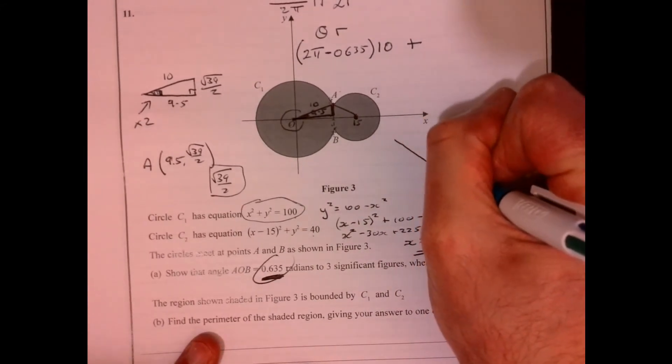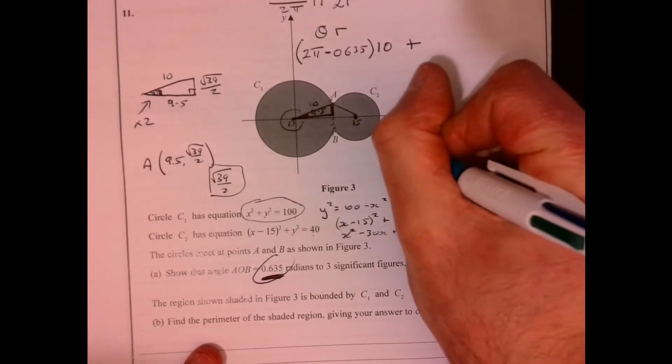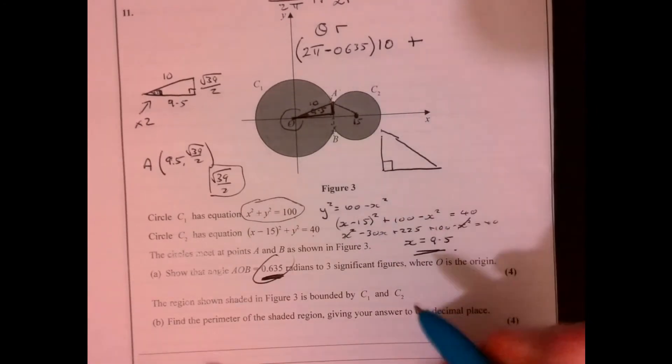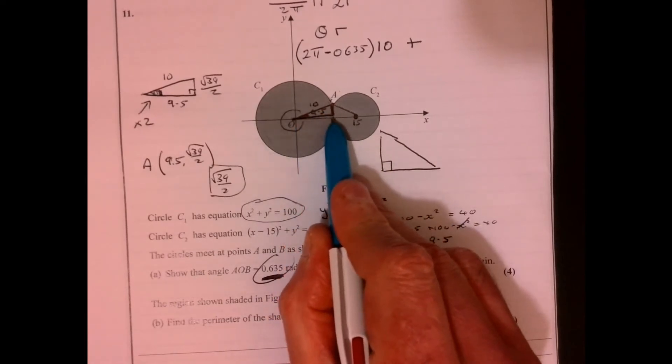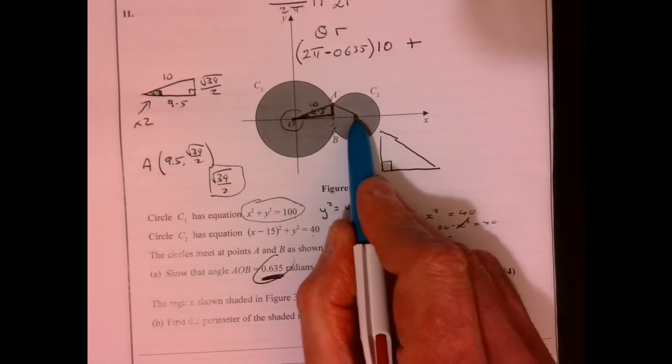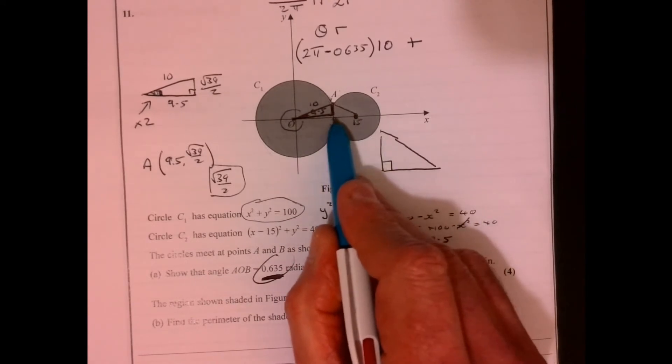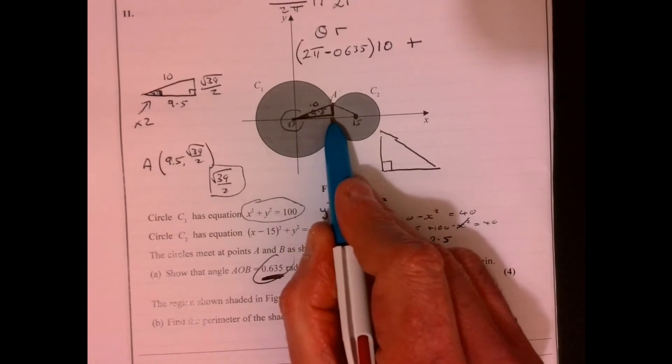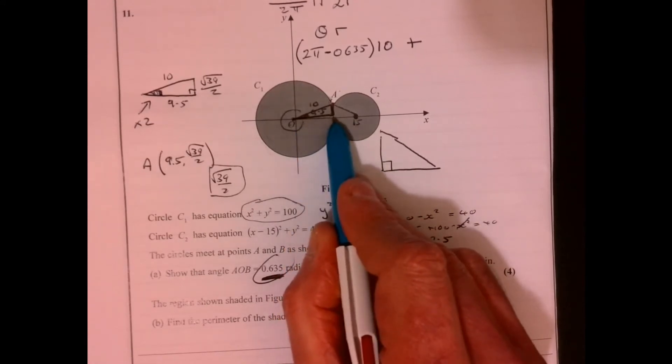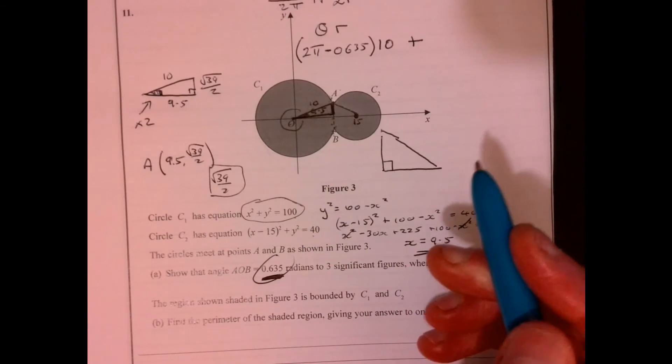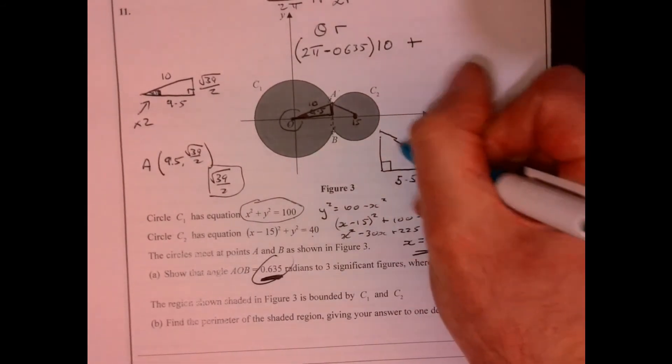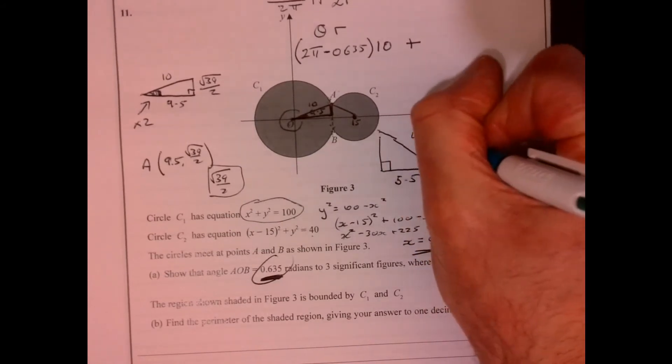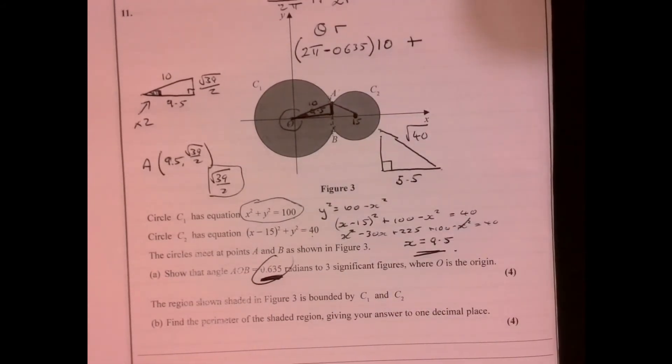All right, so let's think about what we actually know. Right, so if I just sketch out, we've got a right angle triangle here, but think about what I know now. Think about this: this was 9.5 up to here, wasn't it? I know that the center there is 15. I know it's 9.5 to there, so 15 take away 9.5, that's 5.5, isn't it? So that point there's got to be 5.5, and I know that this length is root 40.